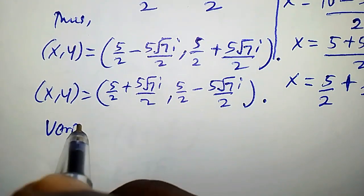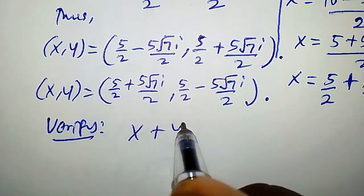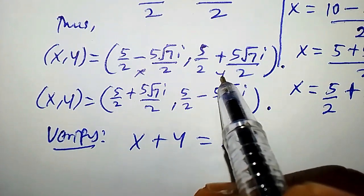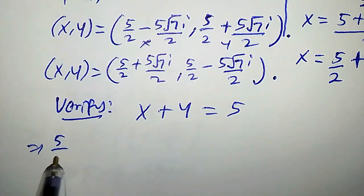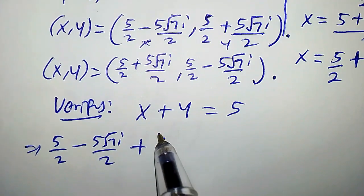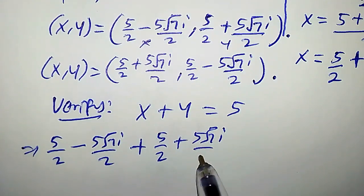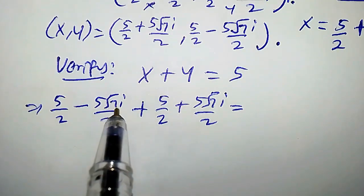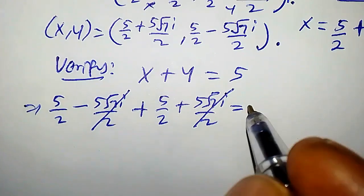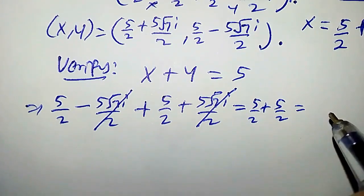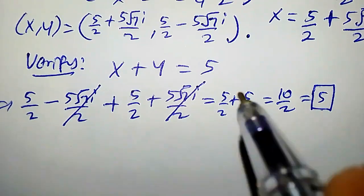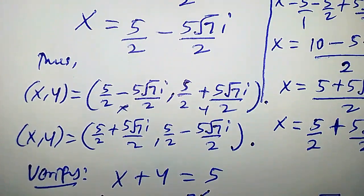Let us verify using equation 1: x plus y equals 5. Verifying the first solution, we plug in x equals 5 over 2 minus 5 root 7i over 2, and y equals 5 over 2 plus 5 root 7i over 2. The terms minus 5 root 7i over 2 and plus 5 root 7i over 2 cancel to zero, leaving 5 over 2 plus 5 over 2, which equals 10 over 2, and that is just 5. This is exactly what we have on the right hand side, so the first solution is correct.